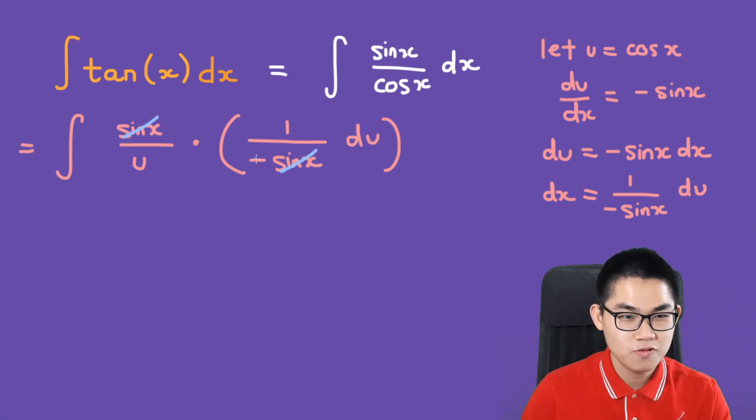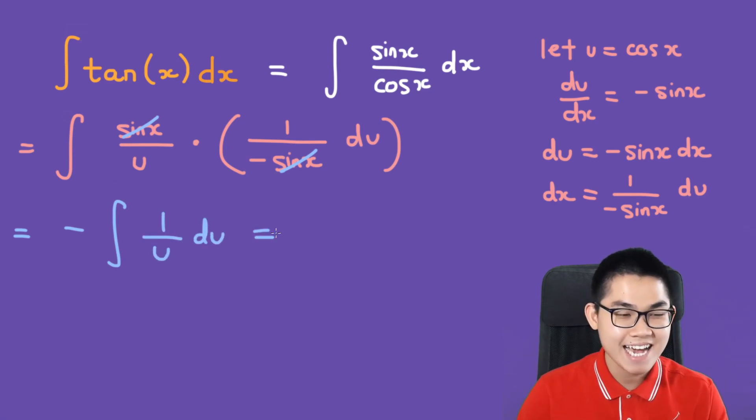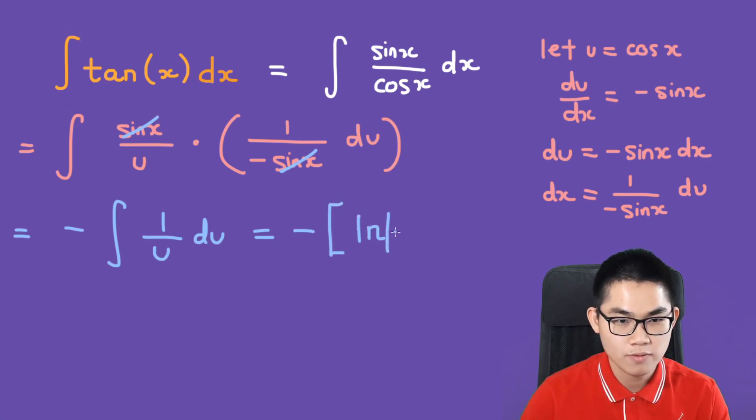And we also have to move this negative outside of the integral. So we have negative the integral of 1 over u du. The antiderivative of 1 over u is the ln of absolute value of u plus c.